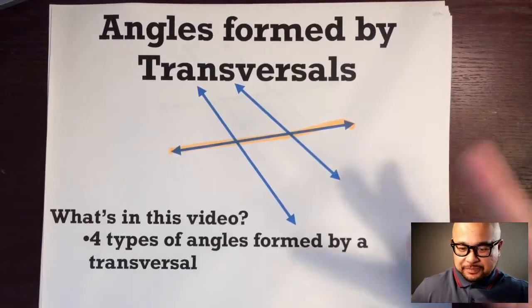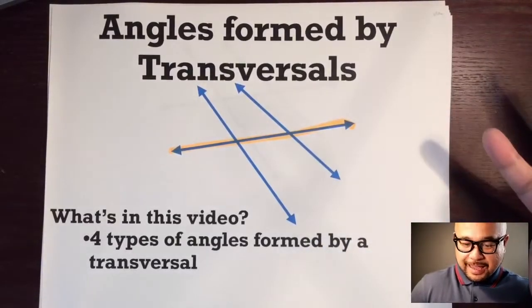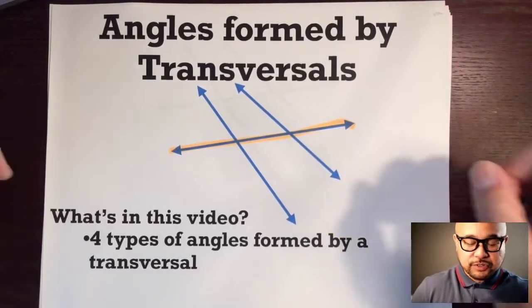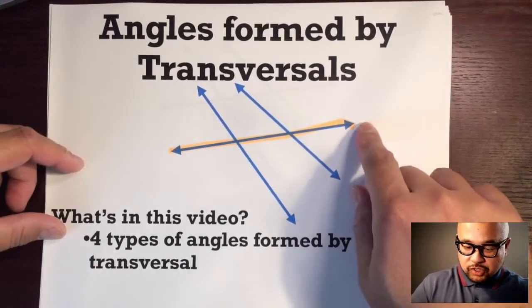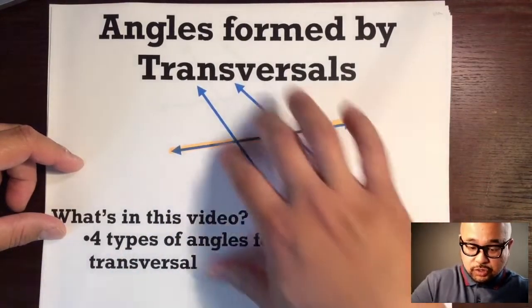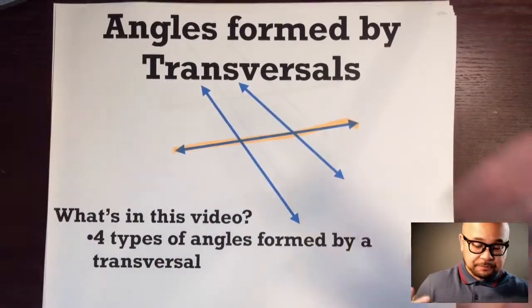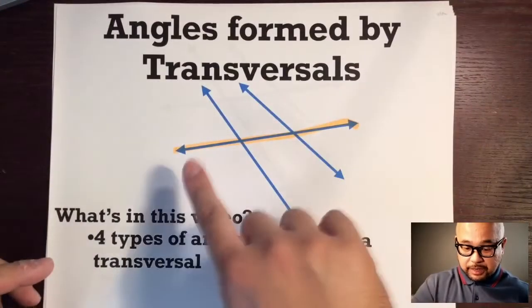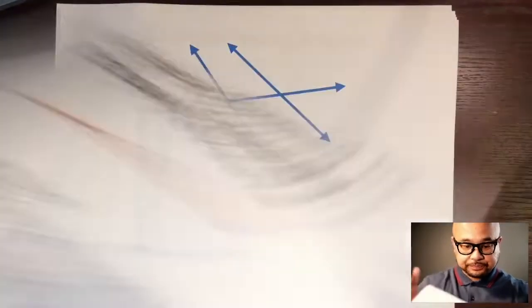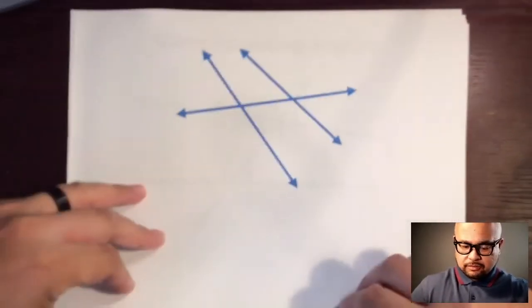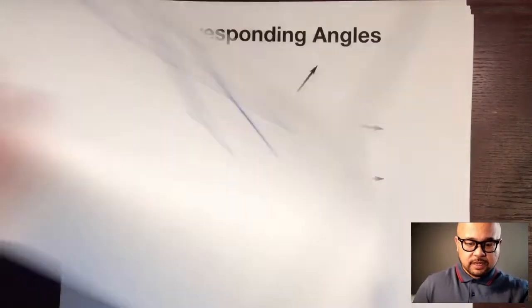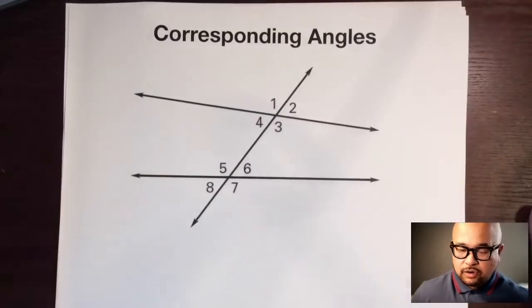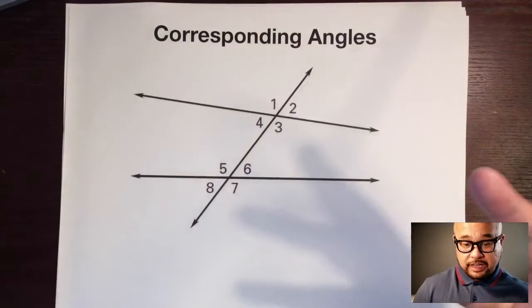Why is that important? Because transversals create a bunch of angles. In this video I'm going to show you the types of angles that transversals create. We're going to talk about the four angles that are formed by transversals — and remember, a transversal is a line that intersects two or more other lines. The first type of angle are corresponding angles, and we're talking about pairs of angles.